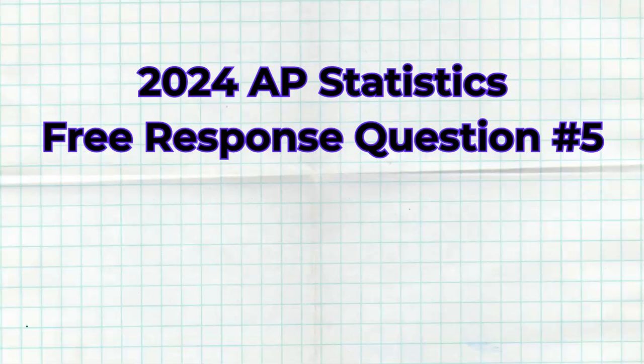In this video I'm going to break down the 2024 AP Statistics free response question number five, dealing with baseball cards. This is a multifocal problem that focuses on exploring two-variable data, but it also looks at conducting a hypothesis test based on that data as well. Let's dive into the problem.